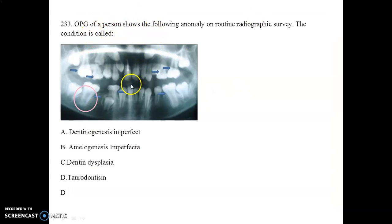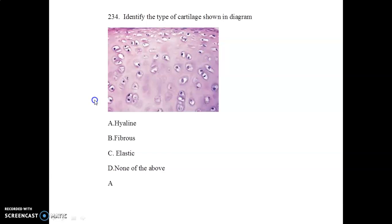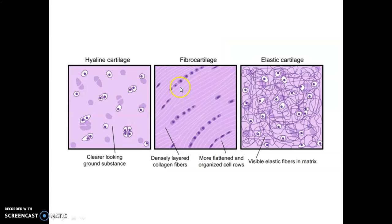An OPG showing an anomaly on routine radiographic survey indicates taurodontism. Next, identify the type of cartilage shown in the diagram — it is hyaline cartilage. In hyaline cartilage you see a clear-looking ground substance; in fibrocartilage there are densely layered collagen fibers with flattened, organized cell rows; and in elastic cartilage you can see visible elastic fibers in the matrix.